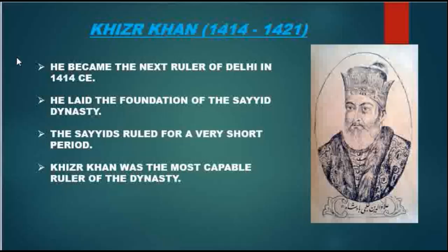The first ruler of the Sayyid dynasty was Khijra Khan. He became the next ruler of Delhi in 1414 CE. He laid the foundation of the Sayyid dynasty. The Sayyids ruled for a very short period. Khijra Khan was the most capable ruler of the dynasty.